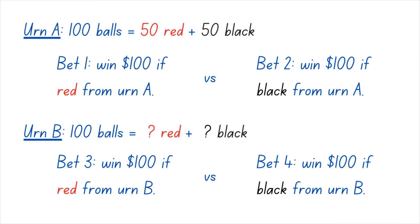Next, you're asked to choose between bet 3 and bet 4. These two bets are the same as bet 1 and bet 2 respectively, except that the ball is drawn from urn B. Most subjects are indifferent between bet 3 and bet 4 as well, suggesting they assume equal numbers of red and black balls in urn B. But here's when it gets interesting: when subjects are asked to choose between bet 1 and bet 3, most prefer bet 1, and when the choice is between bet 2 and bet 4, bet 2 is the preferred choice. This is evidence of ambiguity aversion — subjects favor urn A over urn B as the ratio of red balls to black balls is known for urn A but unknown for urn B.